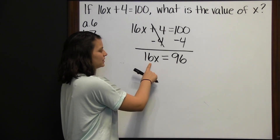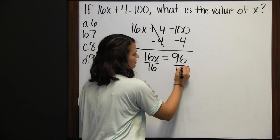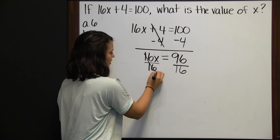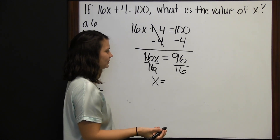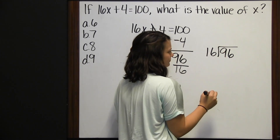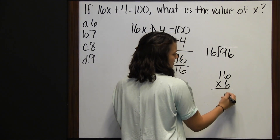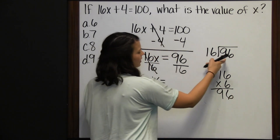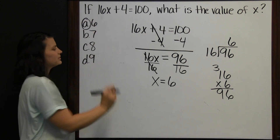The opposite of multiplying by 16 is dividing by 16, so we divide both sides by 16. 16 divided by 16 is 1, and 1 times x is x. Now we divide 96 by 16. 16 goes into 96 six times — 6 times 16 is 96. So x equals 6, answer choice A.